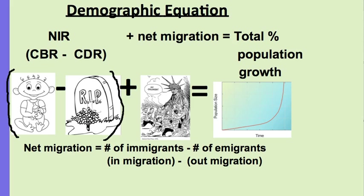The demographic equation is the total population growth in a country, taking into account what's happening naturally — the natural increase rate, births minus deaths — plus what's happening with migration. People entering the country are immigrants (with an 'I'), and people leaving are emigrants (with an 'E', as in exit). So the total population growth, including natural increase rate and net migration, makes up the demographic equation.